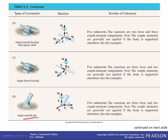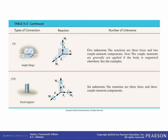A single smooth pin has five unknowns. It prevents translation in all three directions giving all three forces, and you can rotate it about one axis but not the other two, so we add those two couple moments. The couple moments are generally not applied if the body is supported elsewhere. A single hinge prevents translation in all three directions giving all three reaction forces, and it can rotate about one axis but cannot rotate about the other two axes, so we have those two couple moments. Again, we don't usually apply the couple moments if the body is supported elsewhere.